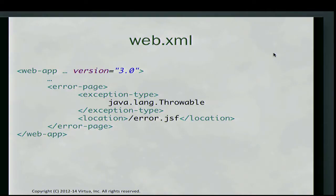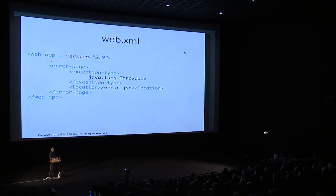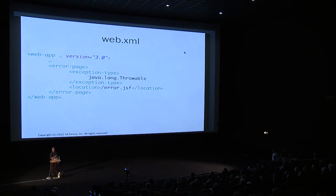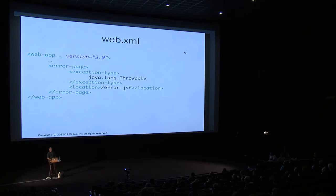If you're writing a web application with a more standard UI, you can just declare an error page in the web.xml file — this basically says any exception at all is going to be sent to this page. You can also send different pages for different exception types. I'm sure your web framework has some solution for this as well.